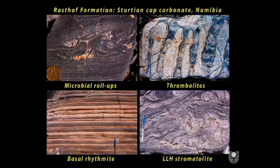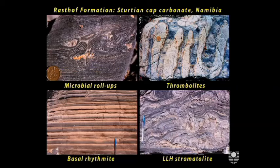Here are some photographs from the Sturtian cap carbonate in Namibia. As shown in the previous diagram, in the Sturtian you usually go directly into the deepest water facies and then shoal upwards from there. So this transgressive tract is missing, but the highstand has lots of unusual microbial structures in it.